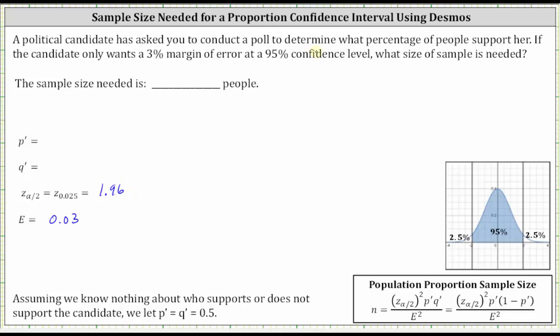Notice how we are not given the sample proportion, P prime or Q prime. Assuming we know nothing about who supports or does not support the candidate, we assume 50% support the candidate and 50% don't support the candidate, and therefore P prime and Q prime are both 0.5. Sometimes you may be given information about P prime, but if not, we assume it's 0.5 or 50%.